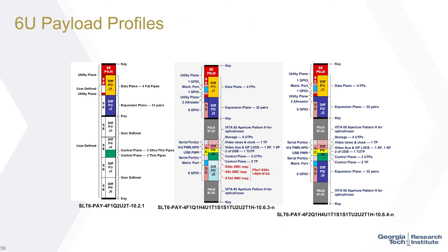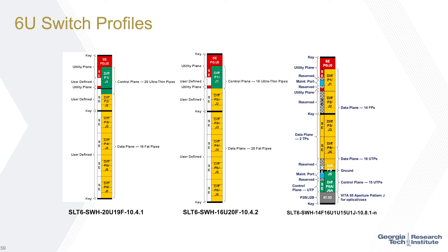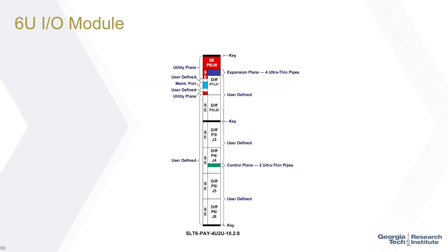Those are all 3U profiles. Similarly, there are 6U profiles as well. You can again see the evolution from early HOST standard to the more well-defined, recommended ones — 10.6.3 and 10.6.4 — for SBCs or RF payloads. The 6U form factor has a lot more pins so there's a lot more functionality behind these interfaces. Switches are also available in the 6U form factor, and there's an external I/O peripheral module for use in your system as well.